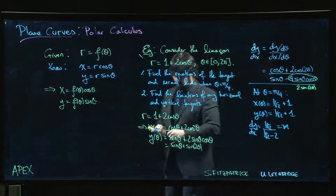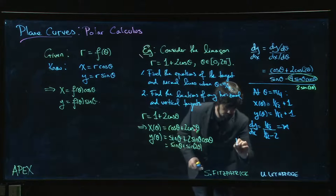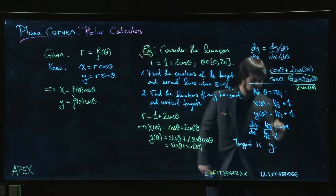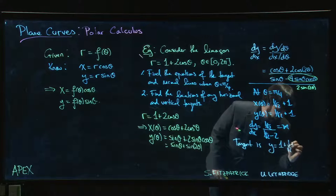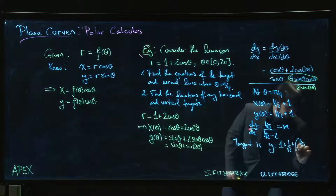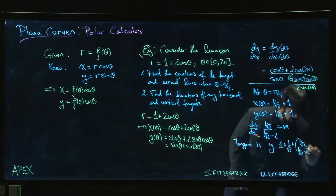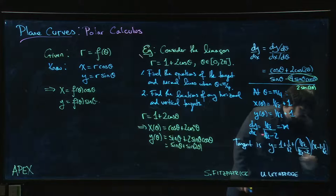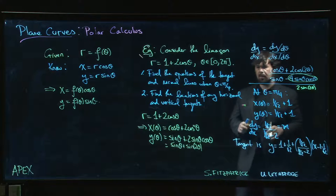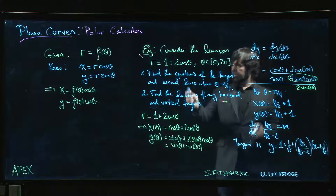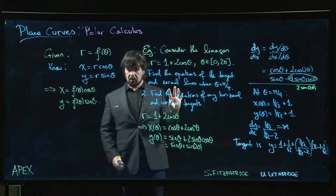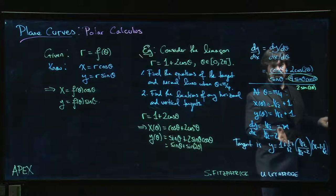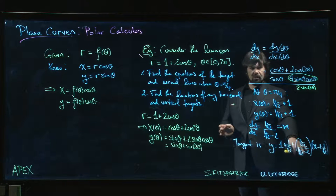And now we can finally answer question 1. The equation of our tangent line will be y equals the y coordinate, 1 plus 1 over root 2, plus the slope, 1 over root 2 over 1 over root 2 minus 2. And then we multiply by x minus the x coordinate. So x minus 1 minus 1 over root 2. We can clean that up a little bit, of course, but leave it like that. If you want the normal line, this is the example from the textbook, it also asks for the normal line. Remember the negative reciprocal rule for normal lines?